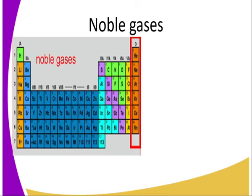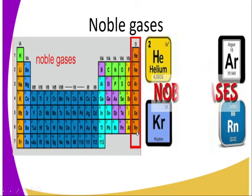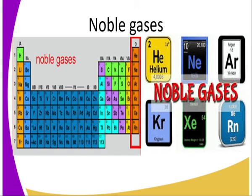Today in this lesson we are going to look at noble gases. The members, as you can see, are identified as the group to the far right of the periodic table. We have helium, neon, argon, krypton, xenon, and others — basically six members of this group.